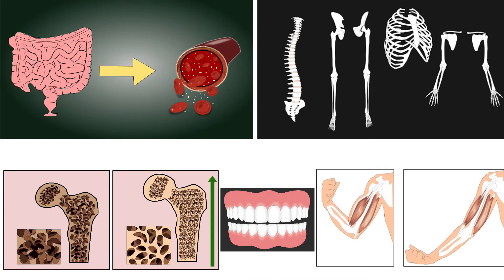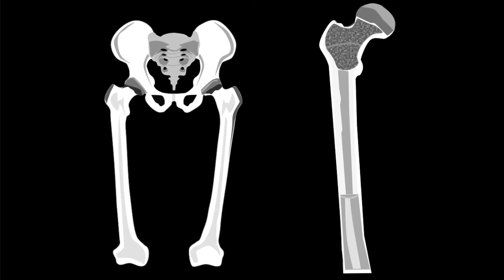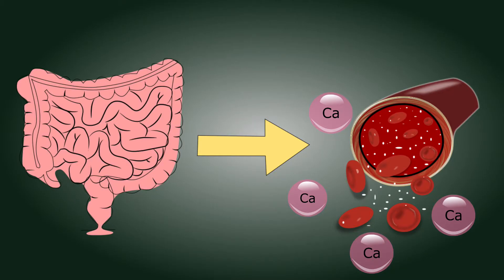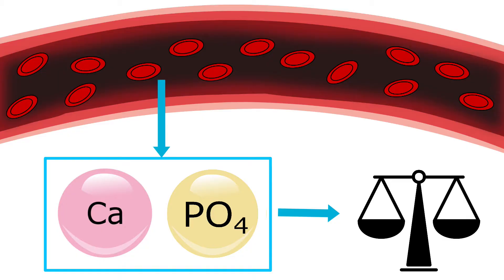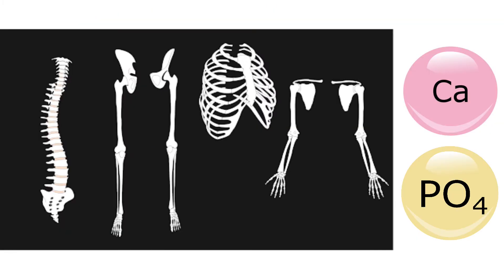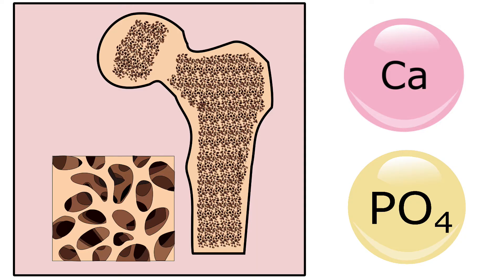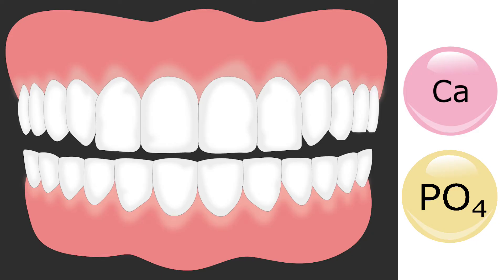Once vitamin D gets activated, it plays several roles in the body. One of the major roles is the formation and maintenance of strong bones. Another is the absorption of calcium in the intestine, and maintaining the levels of calcium and phosphate in the blood. These two nutrients are required for growth and repair of bones, helping maintain correct bone density. Apart from bones, they also help in maintaining strong teeth and muscles.